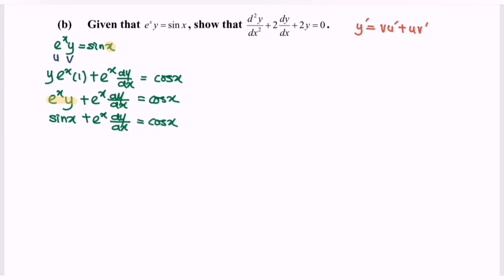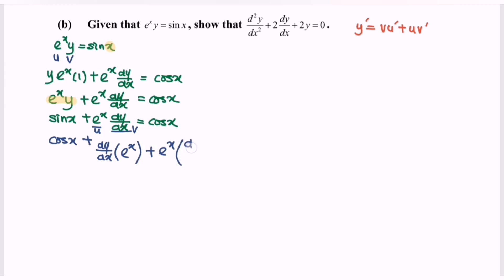Now we need to differentiate the situation for the second time. Differentiating sin(x) gives cos(x). Let the expression e^x·(dy/dx) be treated with the product rule, letting u and v be identified. Applying the product rule: dy/dx multiplied with e^x, plus e^x multiplied by the derivative of v, which gives the second derivative.